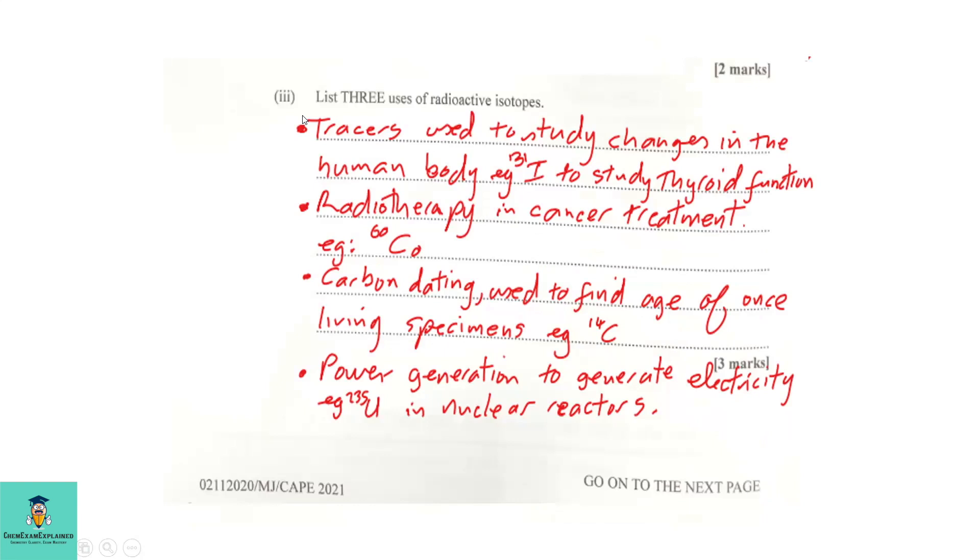Part 3. List three uses of radioactive isotopes. One, they can be tracers used to study changes in the human body. Example, iodine-131 to study thyroid function. Two, radiotherapy in cancer treatment, example, cobalt-60. Three, carbon dating used to find age of once living specimens, example, carbon-14. Four, power generation to give electricity, example, uranium-235 in nuclear reactors.